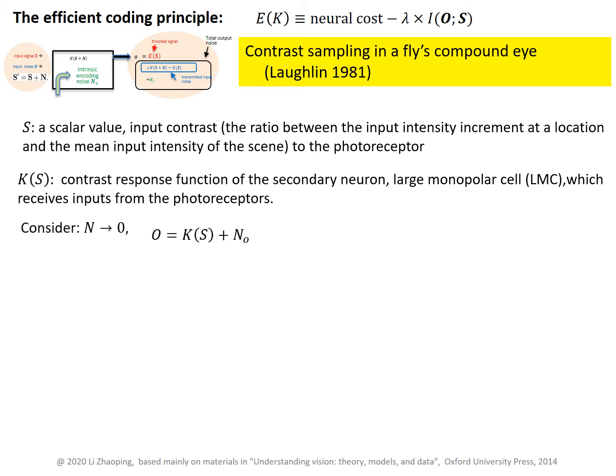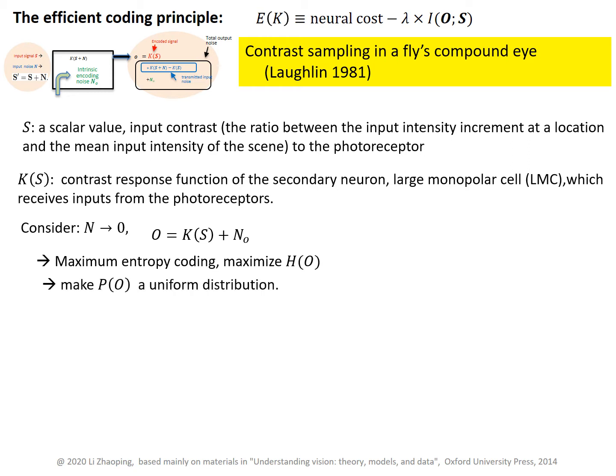We consider the case when input noise is zero. This means that we should use maximum entropy coding to maximize the entropy H(O). Therefore, we need to make O equally likely for all possible O values within the range of O values allowed by this neuron.